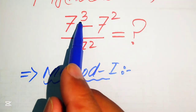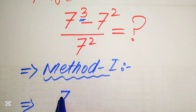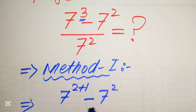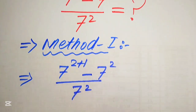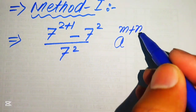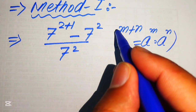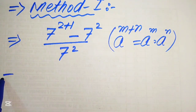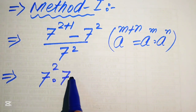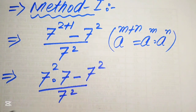In the first method, we focus on the exponent of 7. We write 7 cubed as 7 to the power of 2 plus 1, minus 7 squared, divided by 7 squared. We apply the exponent law: a to the power of m plus n equals a to the power of m multiplied by a to the power of n. So we break the exponent and write it as 7 squared multiplied by 7, minus 7 squared, divided by 7 squared.